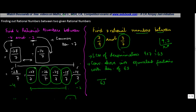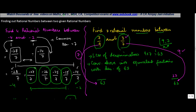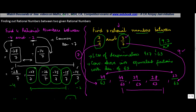For seven upon nine, put the denominator as 63. The denominator nine was multiplied by seven to get 63, so multiply the numerator seven by seven to get 49. For three upon seven, the denominator seven was multiplied by nine to get 63, so multiply three by nine to get 27. Now you need three rational numbers between 27 upon 63 and 49 upon 63 — they can be 28 upon 63, 29 upon 63, 48 upon 63, or any other combination of numerators between 27 and 49.